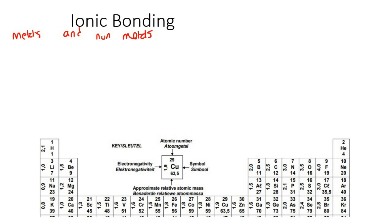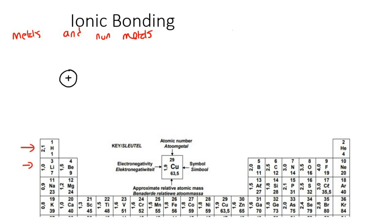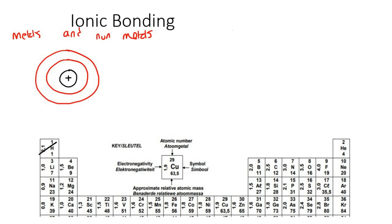Let's choose lithium as our example metal. If we draw the full structure of lithium, we know it has a positive nucleus in the middle. It's in row number two, so it has two energy levels. In energy level number one it has two electrons, and then in energy level number two it has one electron.